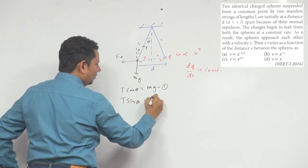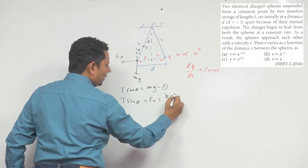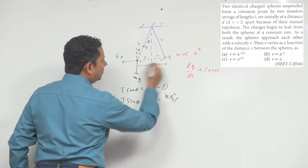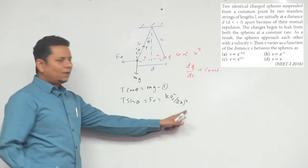Or F_e we can write here as k q square divided by the distance between them. The total distance is 2x, so its square comes, so this is your distance x.